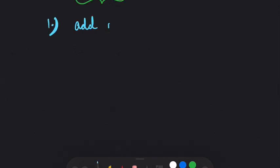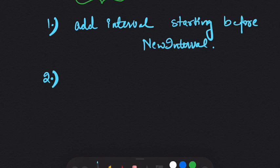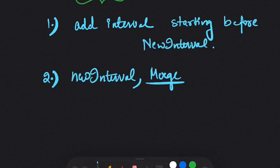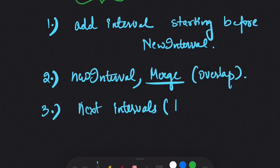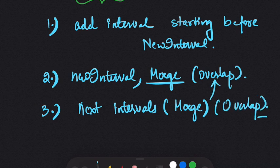To summarize the approach: first, add all intervals that start before the new interval. Next, add the new interval and merge it with existing intervals if there is an overlap. Third, add remaining intervals and merge with the last interval if there is an overlap. Finally, return the result.